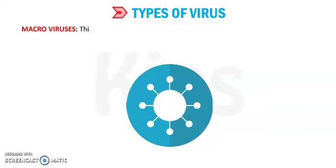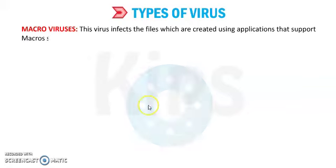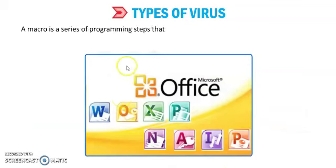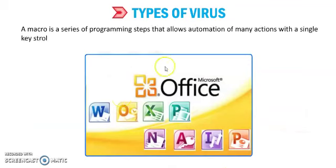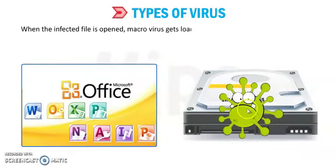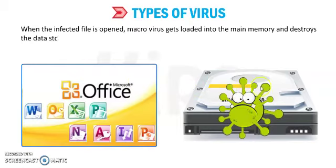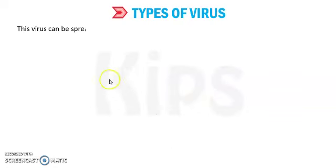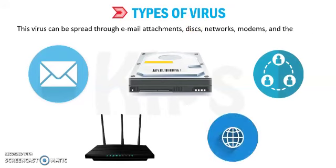The next type is macro virus. Macro viruses infect files created using applications that support macros, such as Word, Excel, and PowerPoint. A macro is a series of programming steps that allow automation of many actions with a single keystroke. When the infected file is opened, the macro virus gets loaded into memory. Once the macro virus becomes active on your computer, every document you produce will become infected. This virus can spread through email attachments, disks, networks, modems, and internet connections.